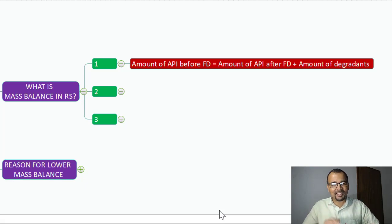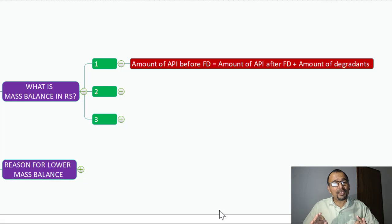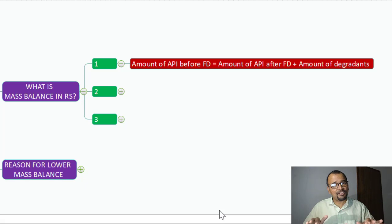Here is the concept which will help you in understanding the mass balance equation. The expectation is that the amount of API before forced degradation will be equal to the amount of API after forced degradation, plus the amount of degradants generated during the study. There must be an equal mass present on both sides.